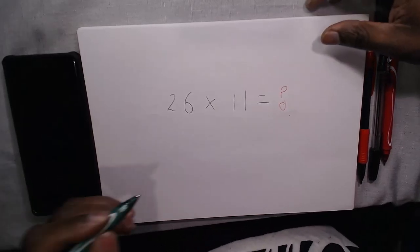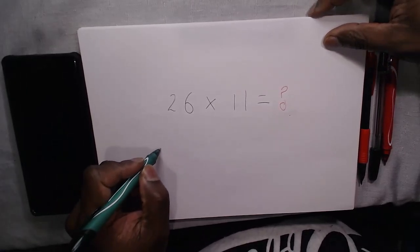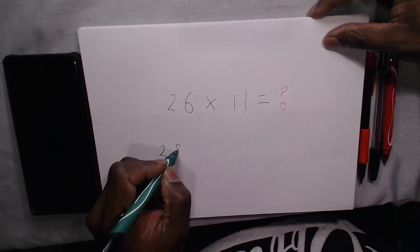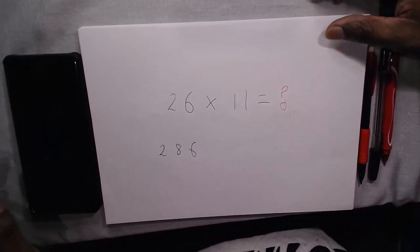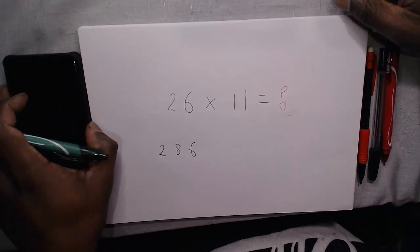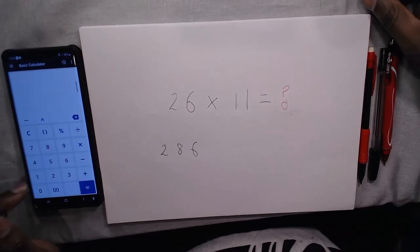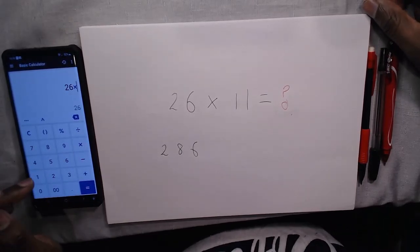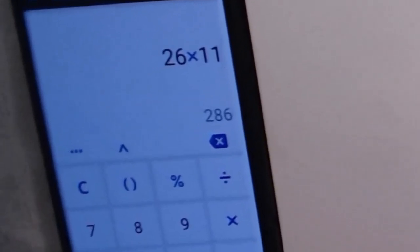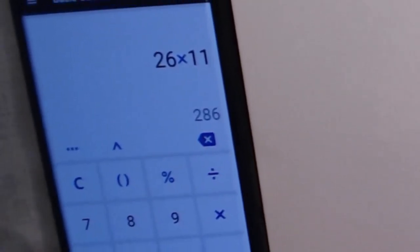Okay, your time is up. You should have gotten an answer of 286. Yeah, let's verify on the calculator. 26 times 11 is indeed 286.